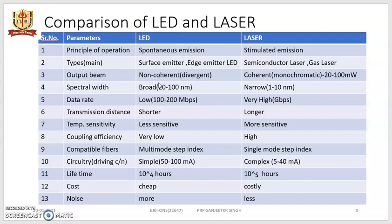The output beam from an LED is non-coherent and divergent — it has a broader spectral width and is not a single particular color. Laser produces a very coherent, single-color (monochromatic) output with light output up to 2200 milliwatts. Spectral width is broader for LED, up to 2200 nanometers at the half-power level, while for laser it is 1 to 10 nanometers, considered very narrow compared to LED.